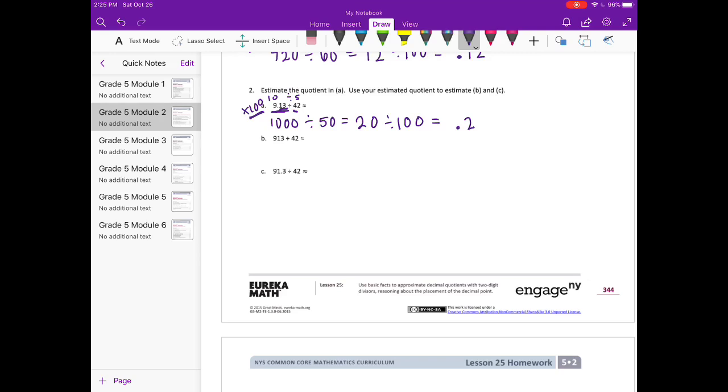In B, it's 913 divided by 42. To get 913 from 9.13, we multiplied by 100. So I'll take my quotient of 0.2 and multiply it by 100. Since they're both divided by 42, we get 20. For C, we have 91.3. To get from 9.13 to 91.3, we multiplied by 10. So 0.2 times 10 equals 2.